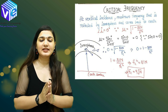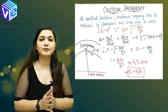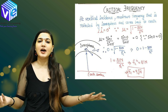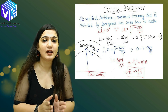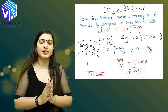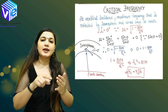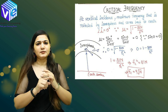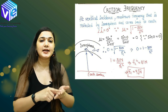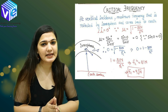The angle this vertical wave makes with the normal is 0, so the angle of incidence I is 0, which means sin(I) is 0. Since sin(0) is 0, sin(I) upon sin(R) will also be 0. Putting this into the formula: 0 equals the square root of (1 minus 81N upon F squared), so 1 equals 81N upon Fc squared.